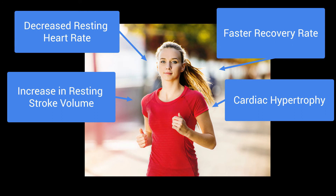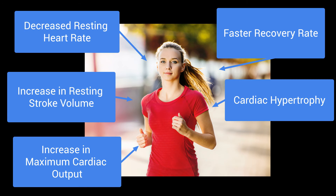Cardiac output is the amount of blood pumped out of the heart each minute, and this is equal to stroke volume times heart rate. A long-term effect of exercise on the cardiovascular system is increased maximum cardiac output. This means that when exercising at full capacity, the heart can now supply the working muscles with more oxygen per minute.